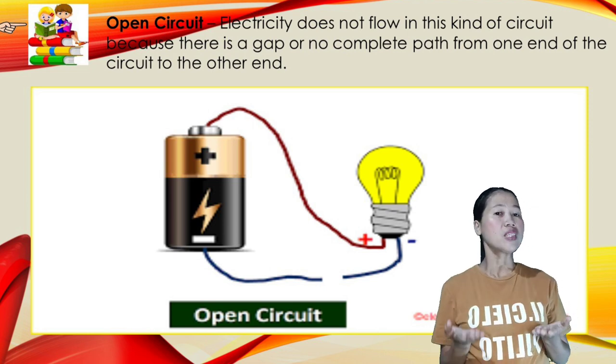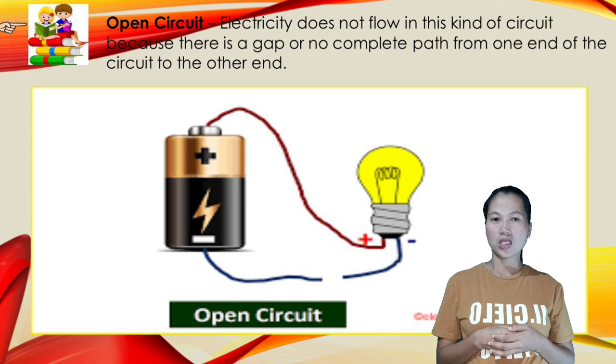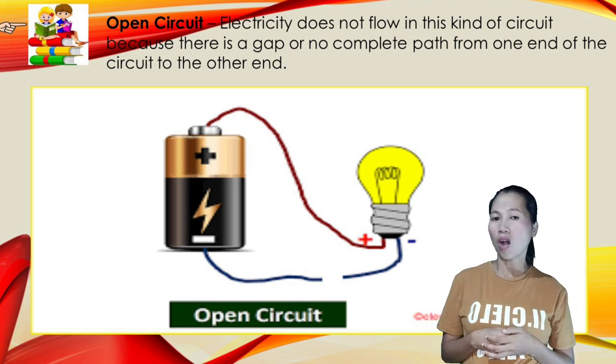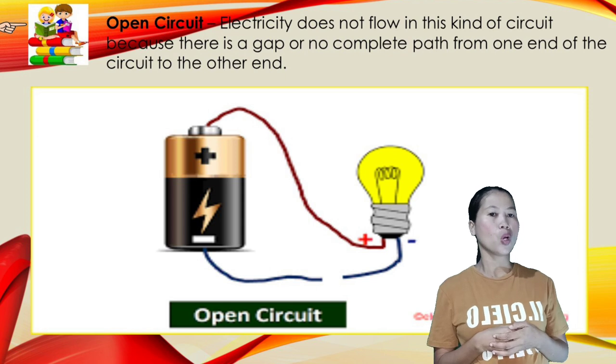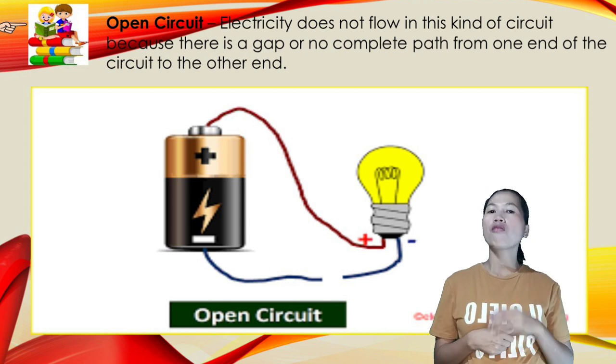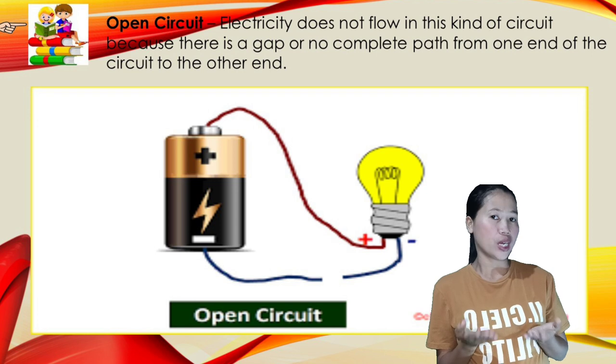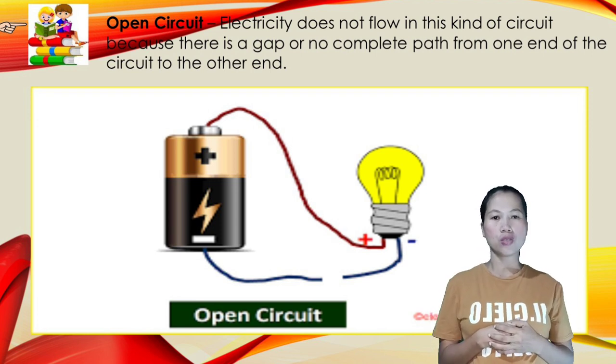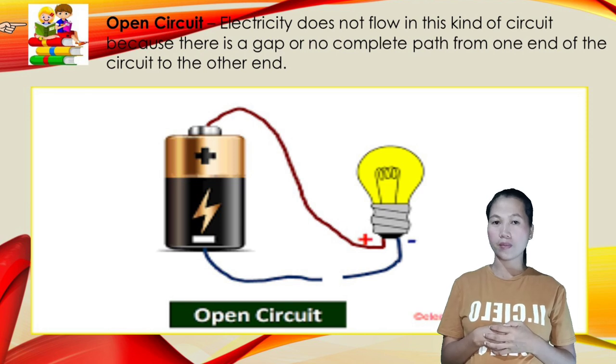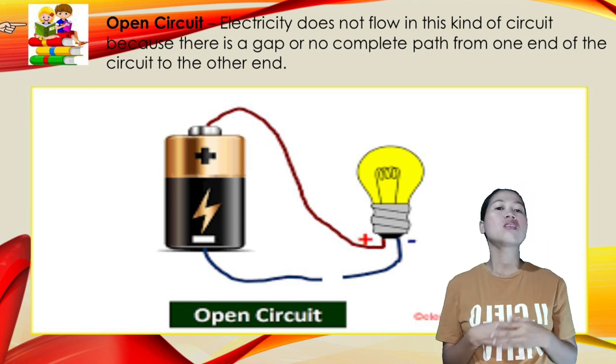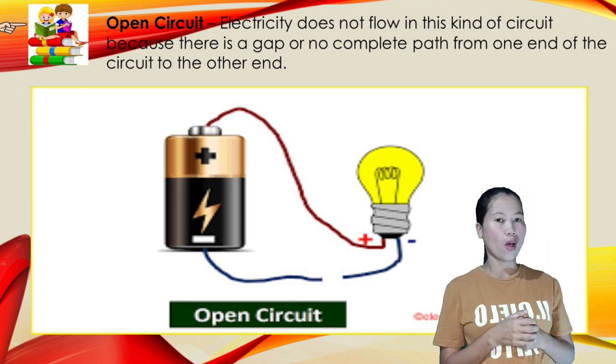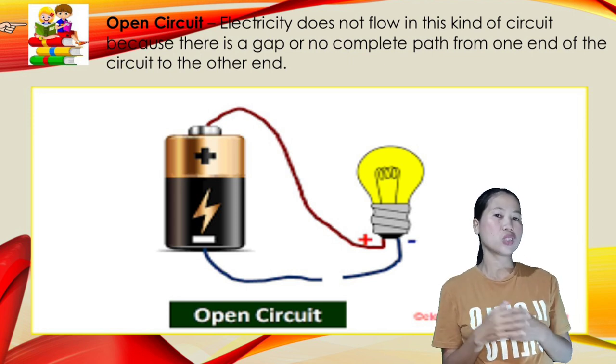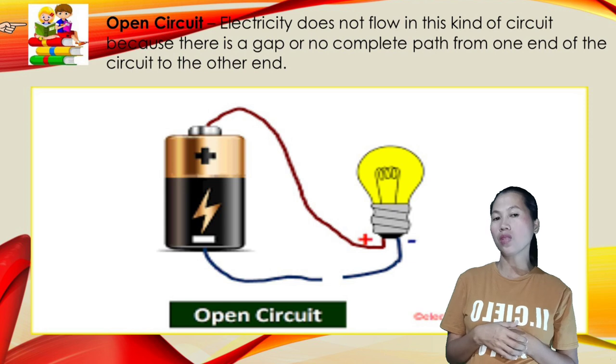In an open circuit, electricity does not flow in this kind of circuit because there is a gap or no complete path from one end of the circuit to the other end. What happened to the bulb after you detach the switch to the wire? Yes! The bulb was switched off from the wire. The circuit was open and so the electricity cannot flow through the circuit.